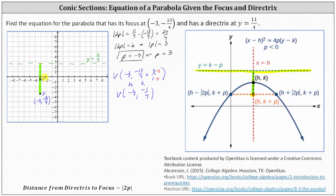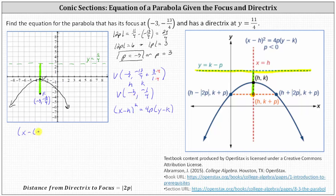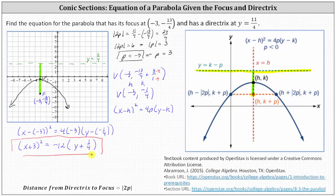Notice the vertex is directly in the middle between the directrix and the focus, and the parabola opens down and would look something like this. Now let's find the equation. We know the equation is in the form of the square of x minus h equals 4p times the quantity y minus k. Substituting in the known values, we have the square of x minus negative three equals four times negative three, times the quantity y minus negative one fourth. Simplifying, we have the square of x plus three equals negative 12 times the quantity y plus one fourth. I hope you found this helpful.